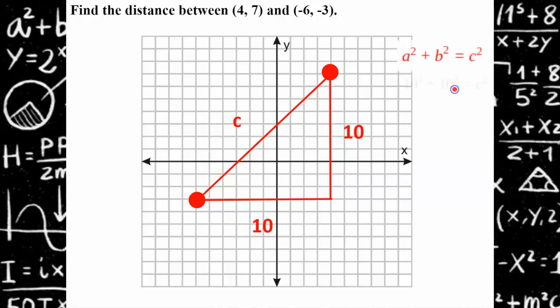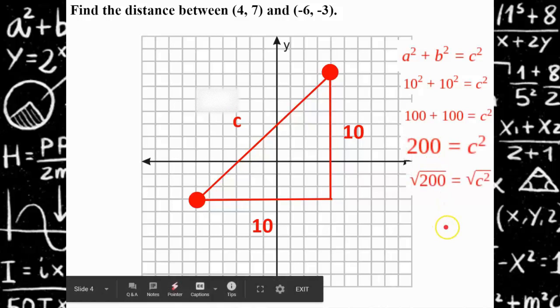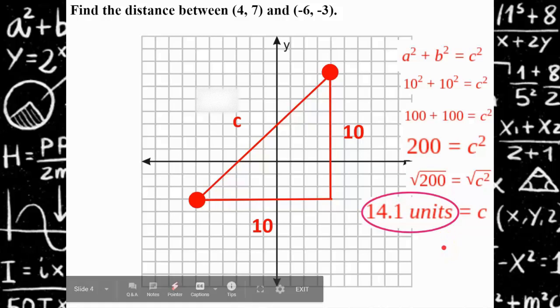So I use the Pythagorean Theorem. I evaluate with the legs a and b, both are 10. 10 squared is 100, so 100 plus 100 is c squared. C squared equals 200. Take the square root of both sides. The square root of 200 is 14.1 units when rounded to the nearest tenth.